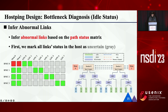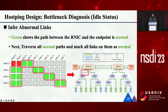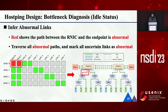We use the metrics in this slide as an example to illustrate the diagnosis algorithm. First, we set the status of all intra-host links as uncertain. The green color in the left matrix shows the path between the R-NIC and the endpoint is normal, and we can infer that all links on these paths are normal. So we traverse all these paths and mark all these links as normal. Red blocks in the left matrix show that the path between the R-NIC and the endpoint is abnormal, meaning some links on this path are abnormal. We traverse all these paths and mark all uncertain links as abnormal. After this process, we could conclude that the CPU root port shown in the figure is abnormal.